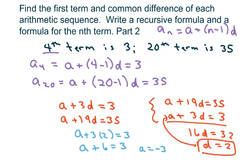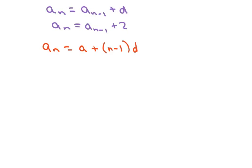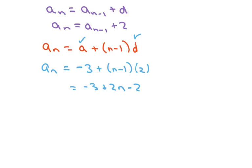Your recursive formula is just going to be your current term equals your previous term plus your d. You just copy this down and add your d, and our d happened to be 2. For our nth term, we use this formula and input our A and d. Our A was negative 3, our first term, and our d is 2. You just have to simplify this, and we get a sub n equals 2n minus 5. So we did all four things.